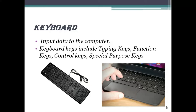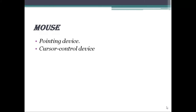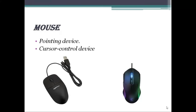Next is mouse. Mouse is a very popular pointing device — it is a cursor control device. In the bottom of the mouse there is a round ball which senses the movement of the mouse and sends the corresponding signal to the CPU when mouse buttons are pressed. This is the basic functionality of mouse — it makes use of the round ball on the bottom side.